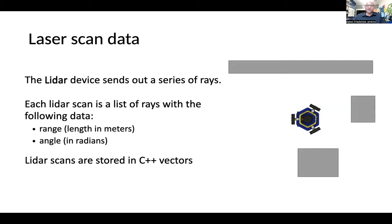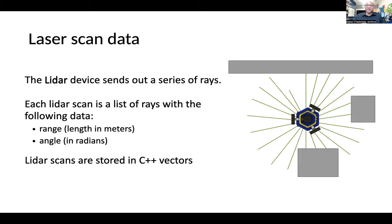What a laser range finder does is send laser light in different directions. That laser light goes out, hits something, and comes back, telling us how far it has gone — so we get both the distance to the object and the direction we sent that laser light. Both the ranges and the angles will be stored in respective C++ vectors: a range vector and an angle vector.